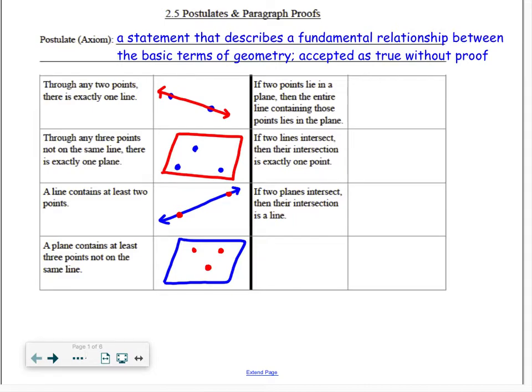Notice that the first and the third postulate are very similar, but the order of the terms is flipped. The first postulate says first you have two points, therefore there is a line. The third postulate is backwards. First I have a line, and then that means I know there must be at least two points. Be careful of the order of the items. The same is true of the second and the last postulate.